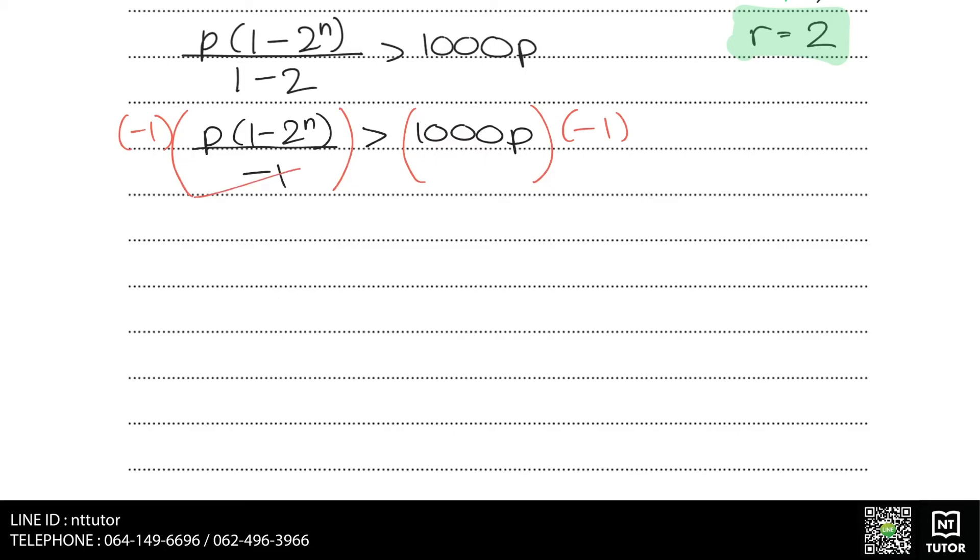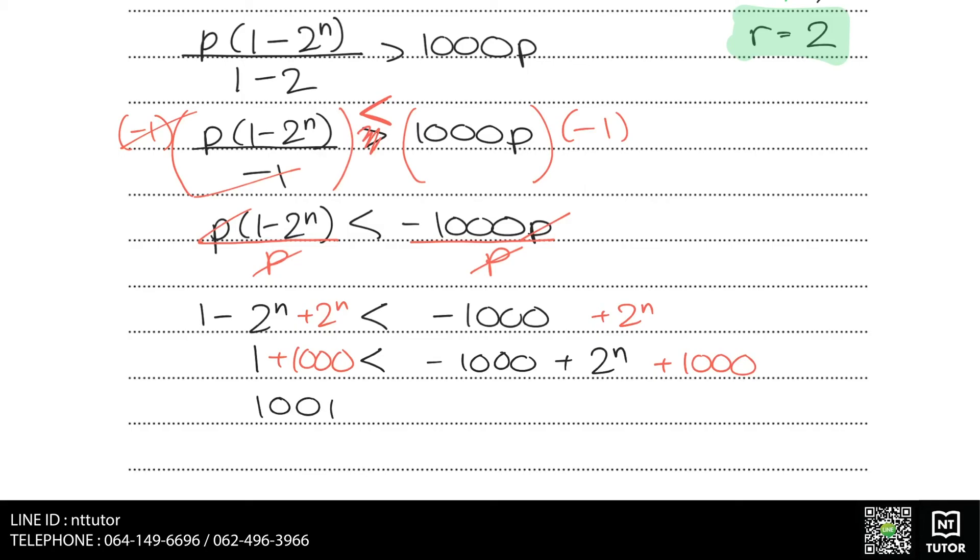When multiplying by minus 1 to both sides, don't forget to switch the signs of the inequality. And finally, we rearrange to make it 1001 is less than 2 to the power of n, which is the same as 2 to the power of n is greater than 1001.